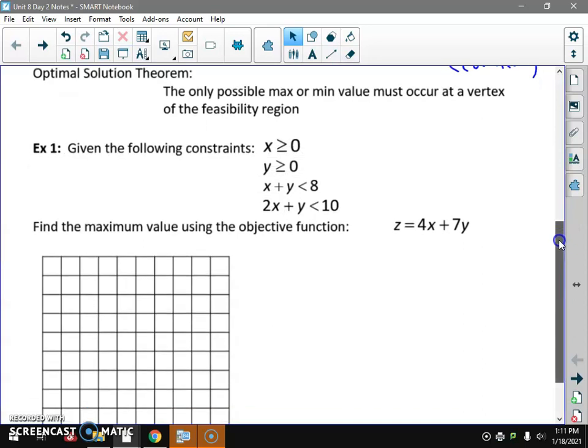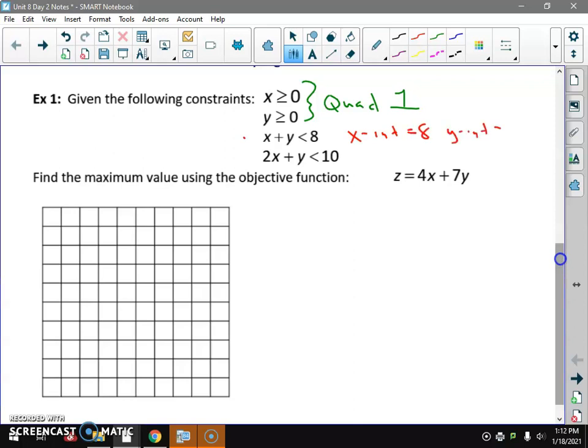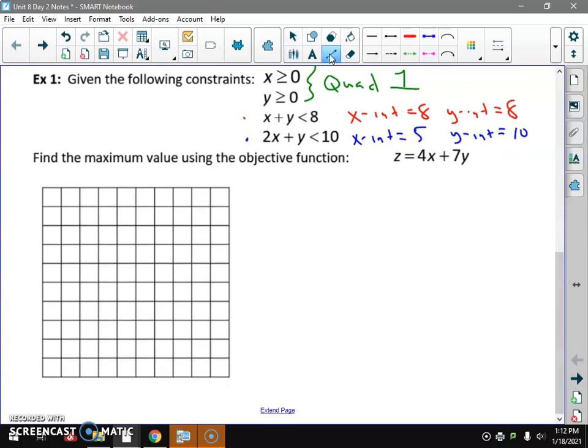We're going to graph this system of inequalities. The first two, that just means quadrant one. X is greater than zero means to the right, Y is greater than zero means up. So we're just going to go first quadrant. I'm going to do the third one in red. X intercept is 8, Y intercept is 8. Last one in blue, X intercept 2X equals 10 so X equals 5, Y intercept equals 10.